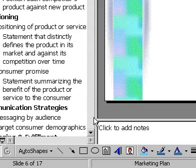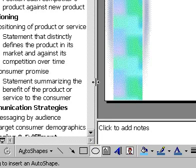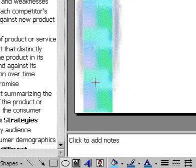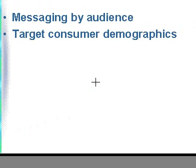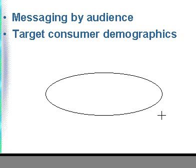To draw an oval, click the Oval tool on the drawing toolbar. With your mouse, point to the place where you wish one corner of your oval to start. Click the mouse button and drag to where you wish the oval to finish. Release the mouse button and your oval will be drawn on your slide.